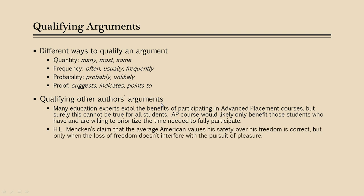Here's another instance of qualifying another author's argument: "H.L. Mencken's claim that the average American values his safety over his freedom is correct, but only when the loss of freedom doesn't interfere with the pursuit of pleasure." So here I've made a concession — I've acknowledged that it's correct, but only under these specific circumstances. That's another way that I can qualify another author's argument.